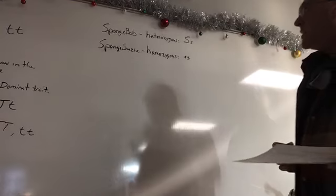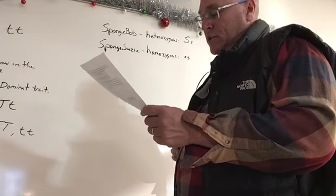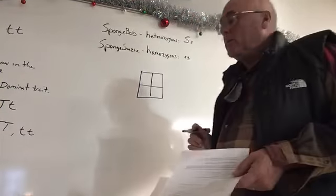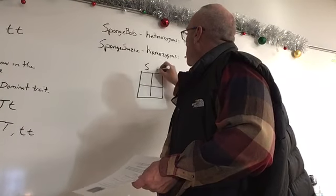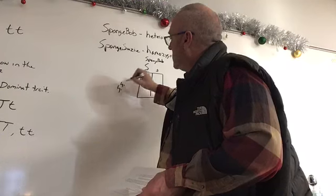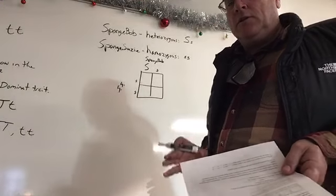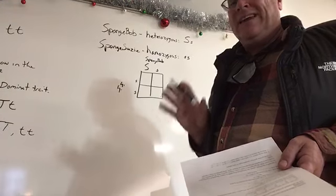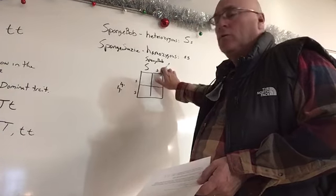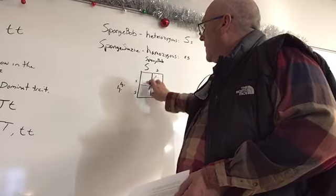Now we know the exact combination of the two parents. It says create a Punnett square to show the possibilities if SpongeBob and Sponge Suzy had children. SpongeBob is capital S lowercase s — we'll label this 'SpongeBob.' Sponge Suzy is lowercase s lowercase s. As a good rule of thumb, if you're using letters that look similar uppercase or lowercase, exaggerate the size so a capital S is drawn very large and a lowercase s very small.